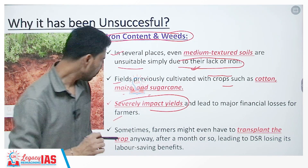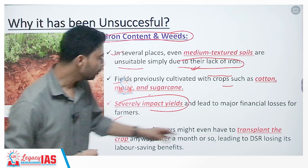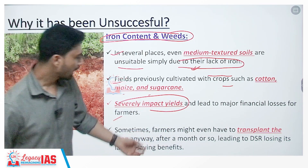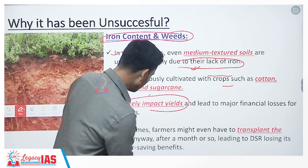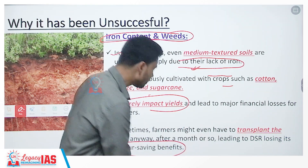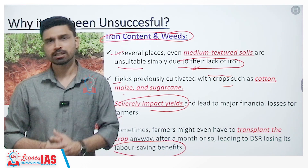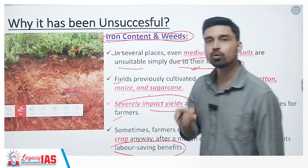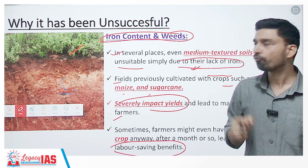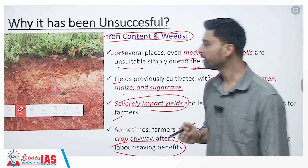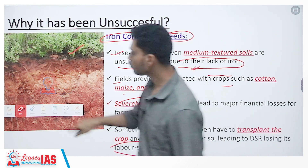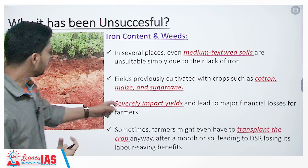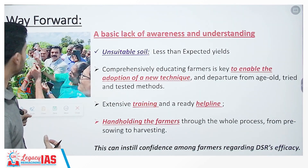Sometimes farmers might even have to transplant the crop anyway after a month or so, causing DSR to lose its labor saving benefits as well. Also, if there is a large number of weeds present in the field, that also interferes with the DSR method, overall decreasing the yield.